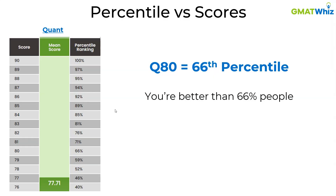So what does this 80 really mean? This 80 is nothing but a score which is mapped to a certain percentile. So instead of telling you that you have scored at the 66th percentile on the quant section, the GMAT is telling you that you have a quant 80. The moment you see an 80 score in quant, you can understand that you are at the 66th percentile and you are better than 66% of the people.